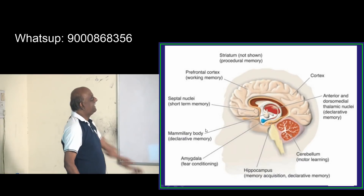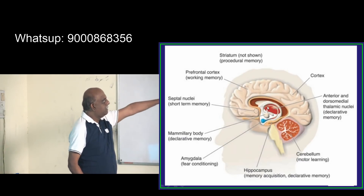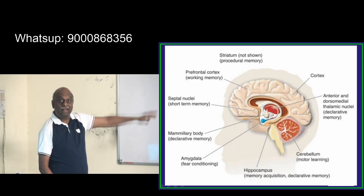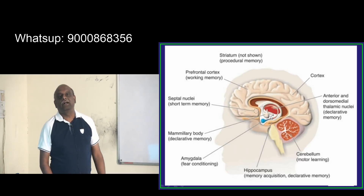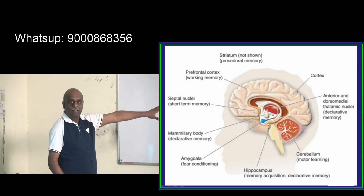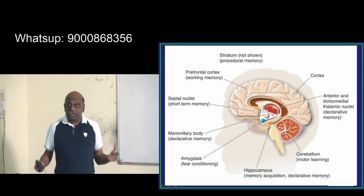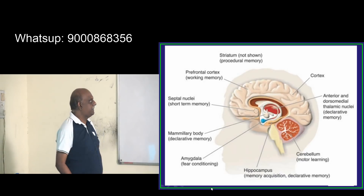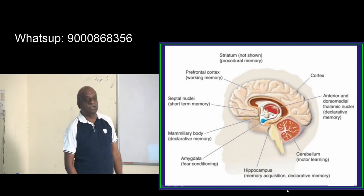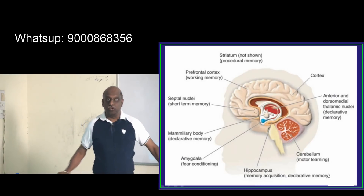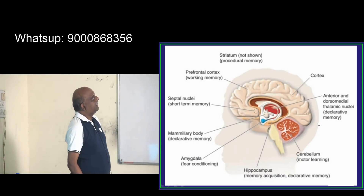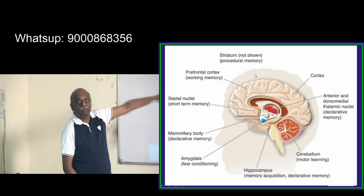The septal nuclei are responsible for short-term memory. The mammillary body is involved in declarative memory and is affected in Wernicke's encephalopathy. The amygdala conditions fear. The hippocampus is for the acquisition of new memories. The cerebellum is for motor learning — for example, you are able to drive a car because of the cerebellum. The striatum is associated with procedural memory.